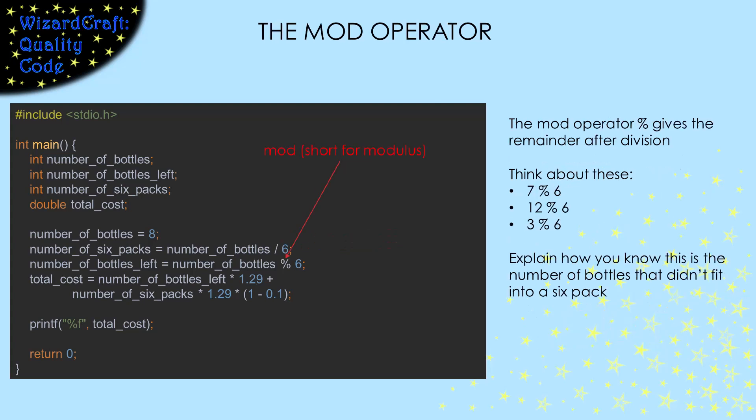This percent sign is the modulus operator. It calculates the remainder after division. Suppose our number of bottles is seven. The remainder when we divide seven by six is one. And that is, correctly, the number of bottles we would need to buy individually.